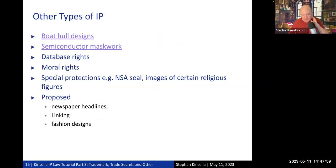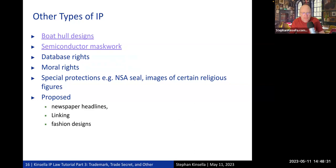Since trade secret is probably the most boring of the four main IP types, and the remaining specialty types — like boat hull designs and semiconductor mask works — are even more so, I'll skip over those. Just keep in mind these are all special types of laws, and other countries have variations. I'm not aware of international treaties beyond the first three — patent, copyright, and trademark — requiring countries to have equivalents of trade secret, boat hull designs, mask works, database rights, or moral rights, though some GATT and WIPO provisions or bilateral investment treaties may address these. Most countries have all this anyway.